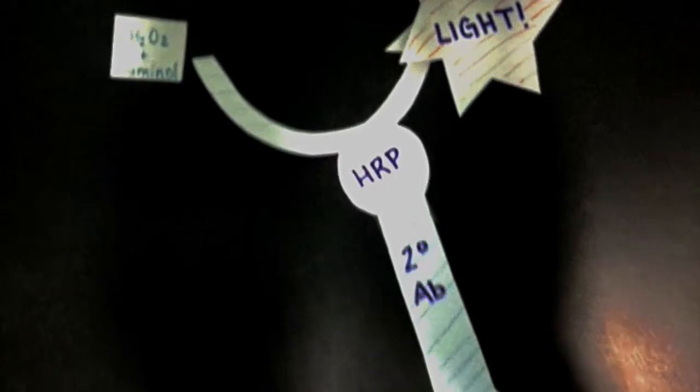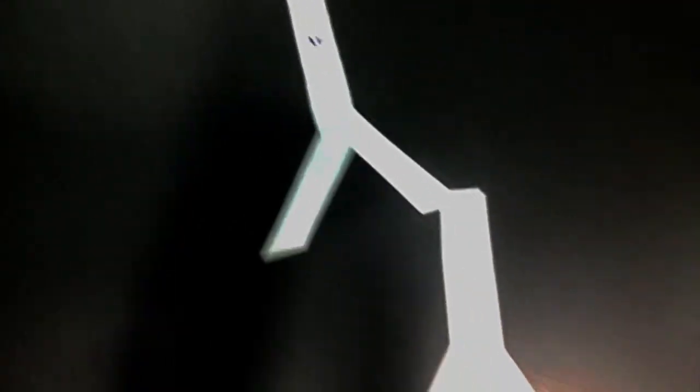Light will be produced and exposed to x-ray film only in the areas where the protein of interest is present and will appear as a dark band.